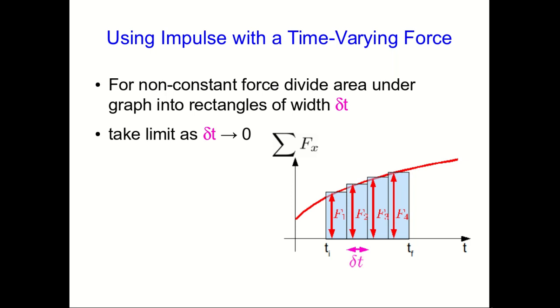And now we let that delta t go to zero. So we're thinking of making narrower and narrower rectangles, more and more of them, and they become a better and better approximation to the actual area under that graph.